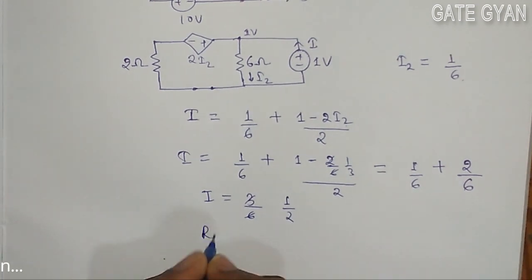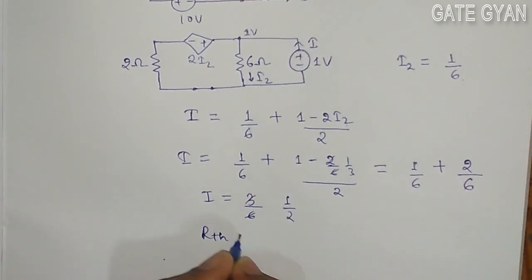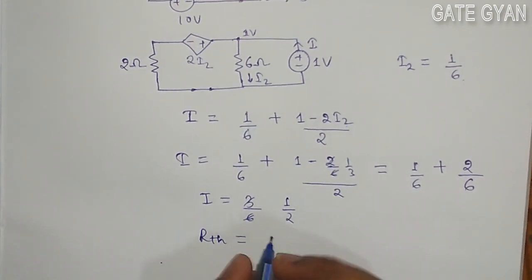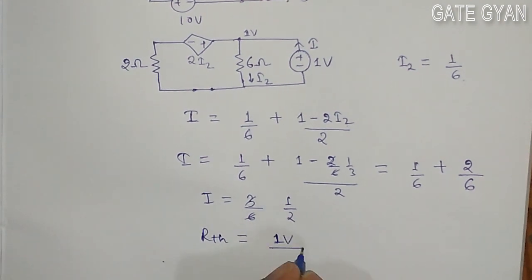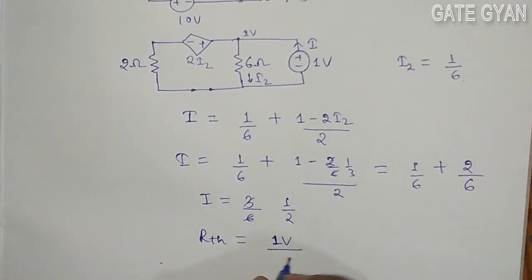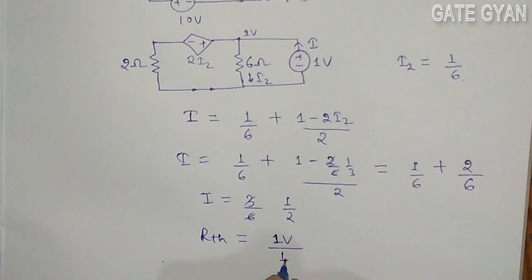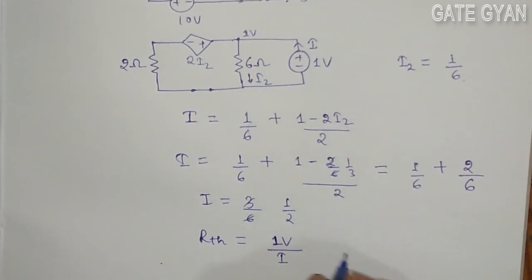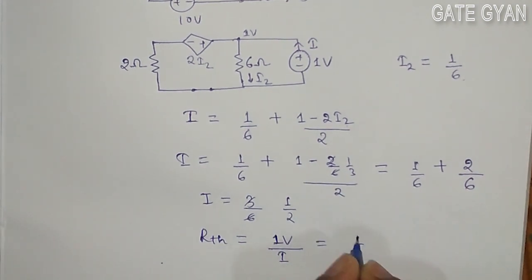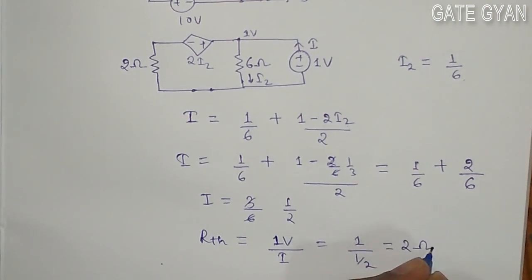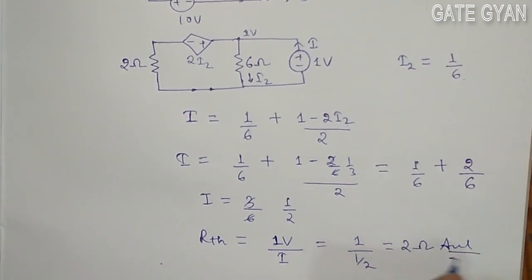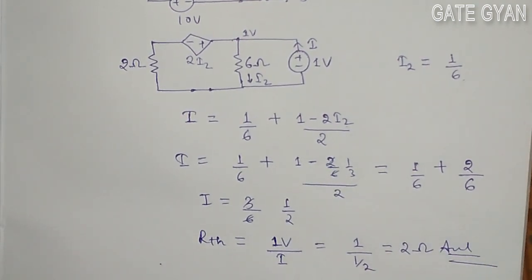So to get RTH, the Thevenin equivalent resistance: RTH will be 1 volt, which we have assumed, divided by the current I. So it is going to be 1 divided by 1/2, that is 2 ohms. So our answer is 2 ohms. Thank you.